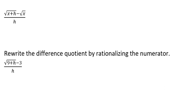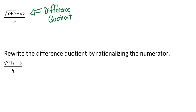In this video, we're going to be rewriting a difference quotient, and we're going to do it by rationalizing the numerator. So let's first talk about what a difference quotient is. This is an example of a difference quotient. Difference quotients occur frequently in calculus, and often they need to be rewritten in an equivalent form that can be evaluated when h equals 0.